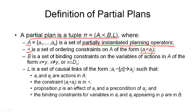The third component are the variable bindings for the actions in set A, telling us what values the variables can take. Variable binding constraints can be more general than just assigning a specific value. We allow three forms: x equals y, meaning two variables must have the same value; x unequals y, meaning they must have different values; or we can specify a domain for a variable, saying it must take a value from a given set.